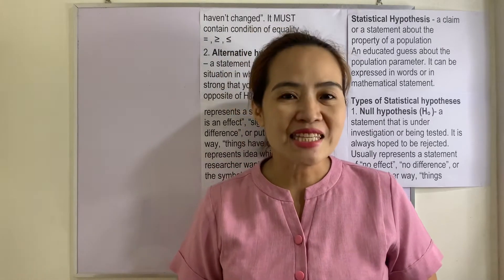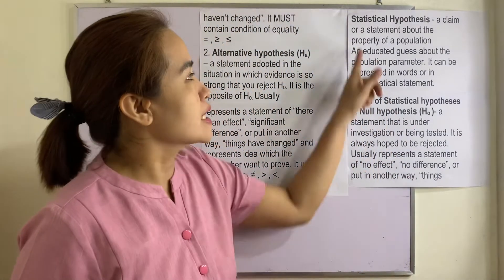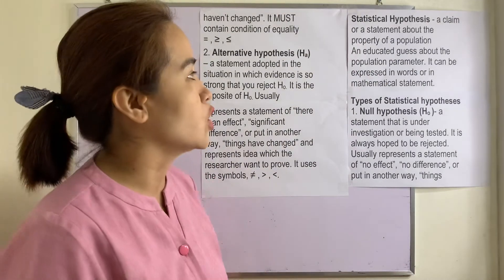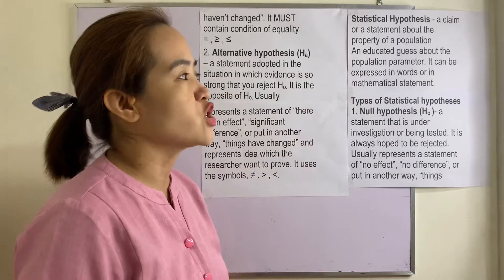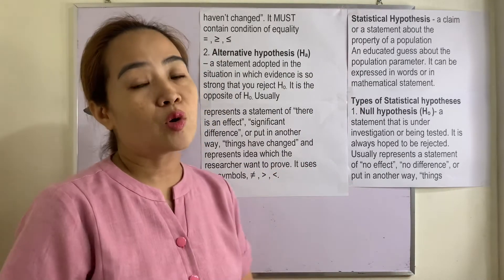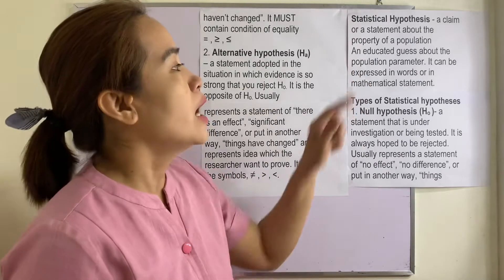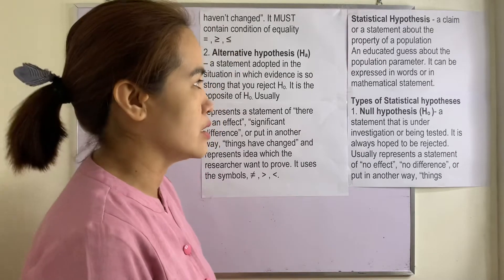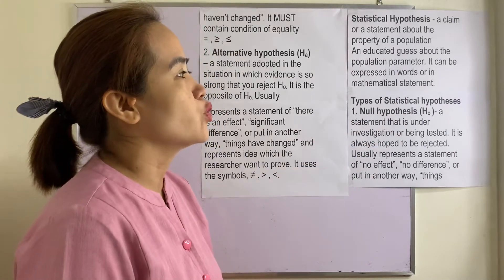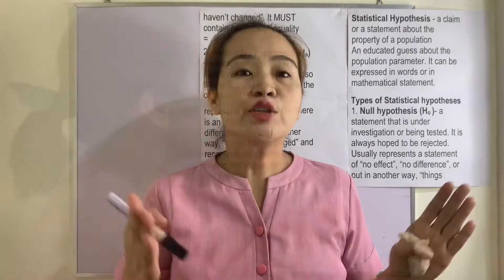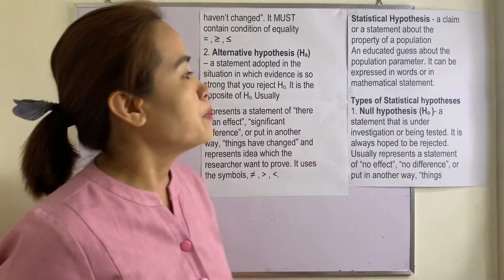What is a statistical hypothesis? It is a claim or a statement about the property of a population — an educated guess about the population parameter. A parameter is a descriptive measure for the population like the mean, the standard deviation, and the variance. It can be expressed in words or in mathematical statement. There are two types of statistical hypothesis.